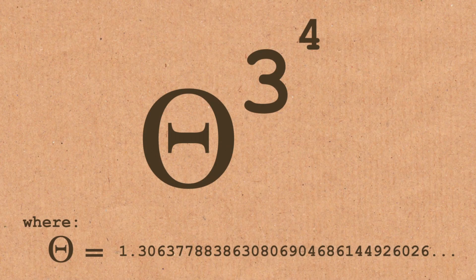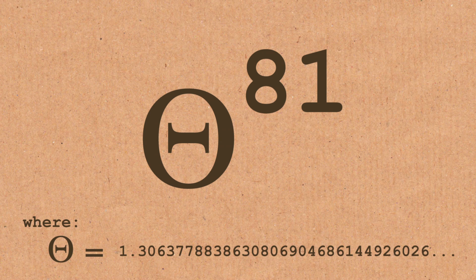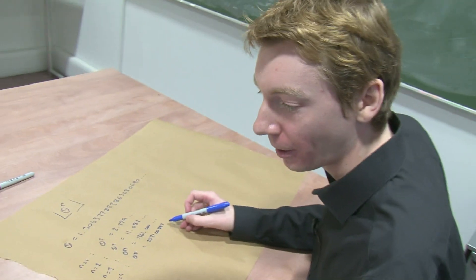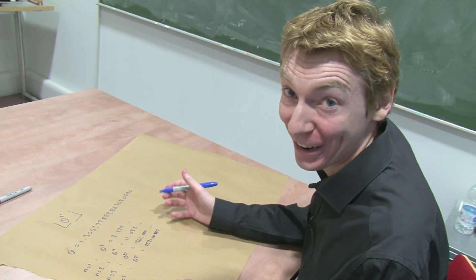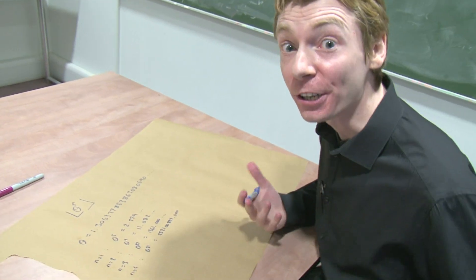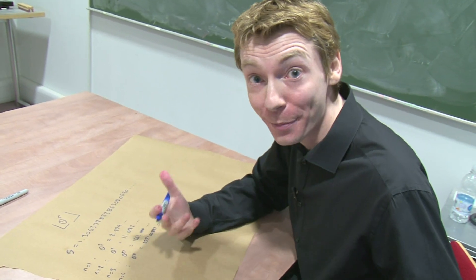Let's do n equals 4. Theta to the power 81. Yeah, 252,100,887. Oh yeah, that's clearly a prime, which is clearly a prime, which is a prime. Point something, something, something, but you round it down. But you're actually guaranteed to get a prime every time.